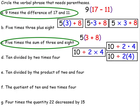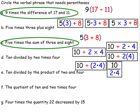'Ten divided by the product of two and four' — we have ten, we're dividing it by the product of two and four, so we have to multiply two and four first. It could look like 10 ÷ (2 × 4), or as a fraction with 10 in the numerator and (2 × 4) in the denominator. A fraction line automatically groups the numerator as one group and the denominator as another group.